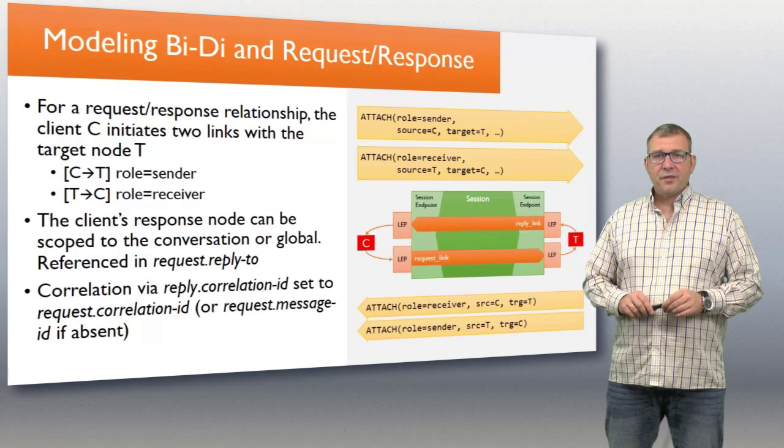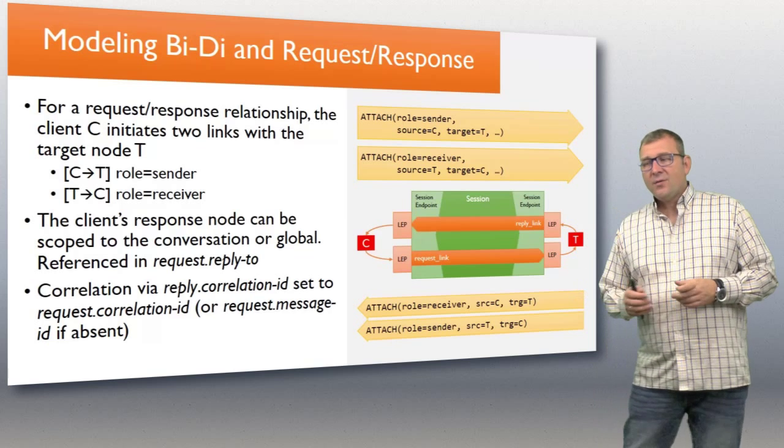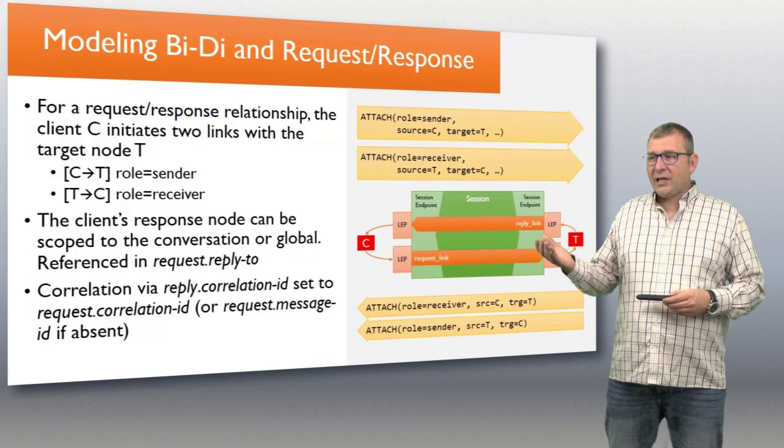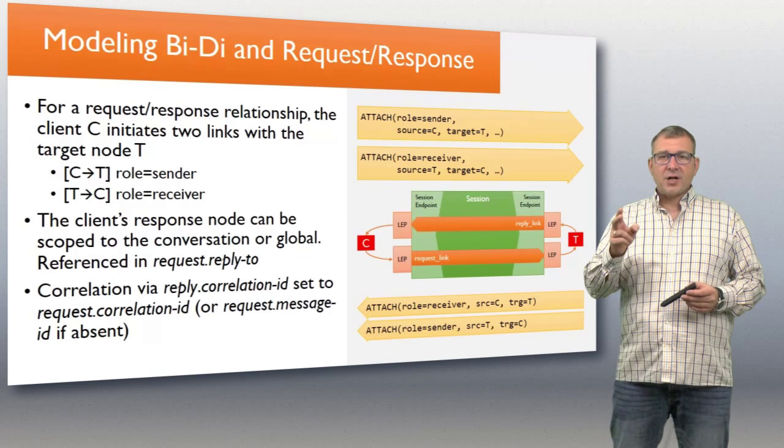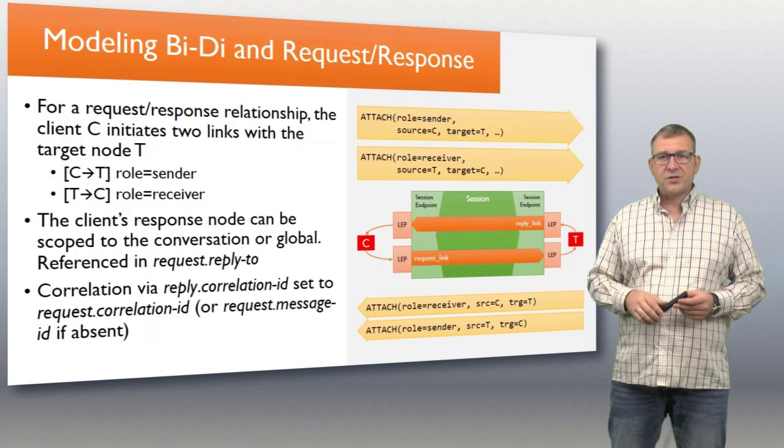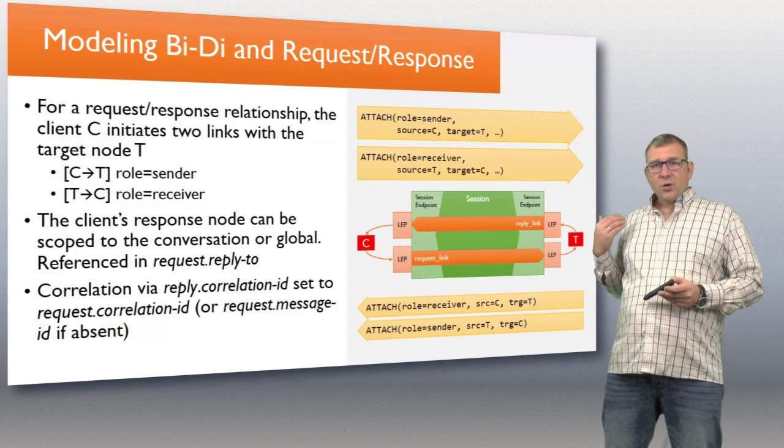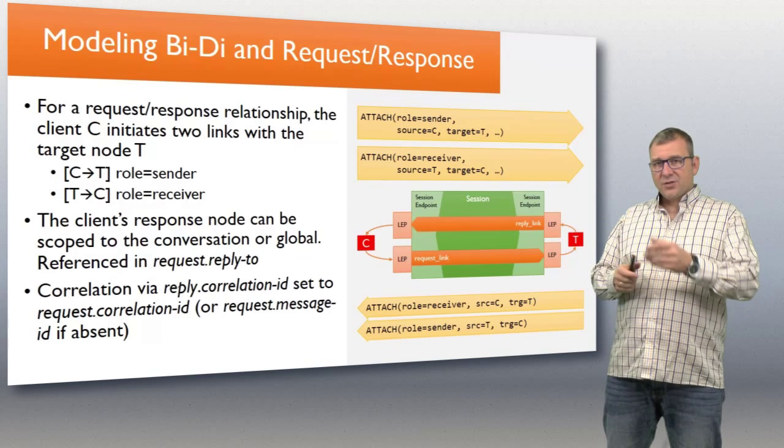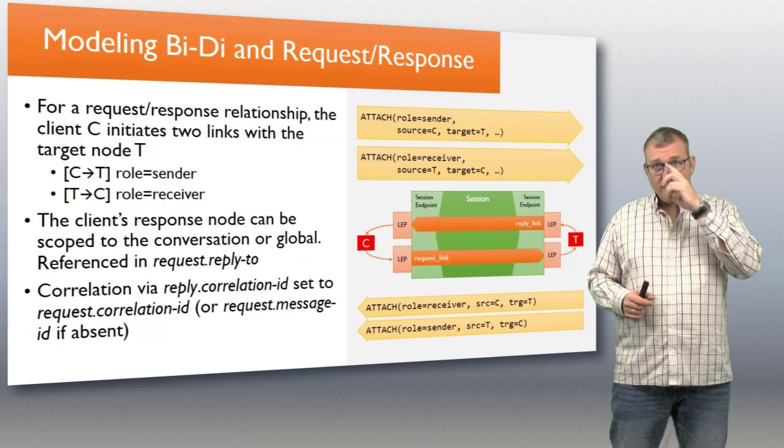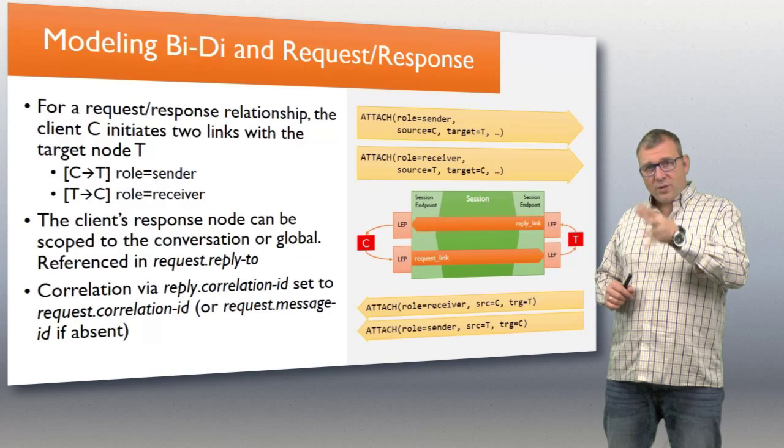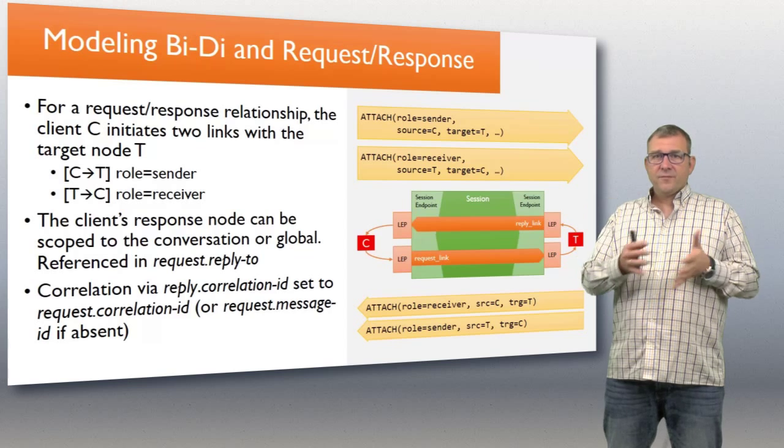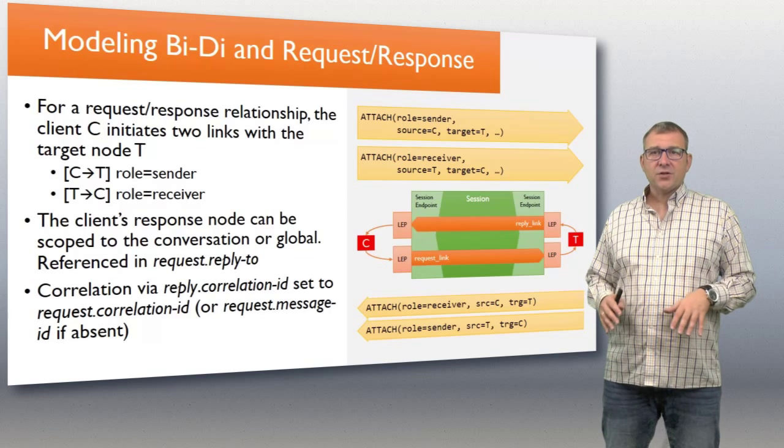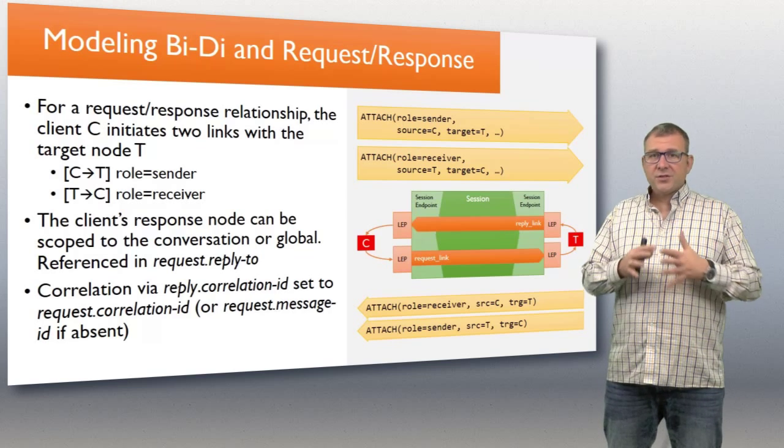What you can also do with those transfers, with those links, is model bi-directional communication very easily. You can model request-response very easily. For a request-response relationship, the client initiates two links with a target node T, one in the role of a sender and one in the role of a receiver. The target accepts both of those. Now the client, the response node that the client has, so the response node where the response comes in, that can be scoped in a conversation so the client can create a node because it's just a virtual construct that's specific to the conversation, or it can be a global thing on some dispatcher, depending on how you want to do this.